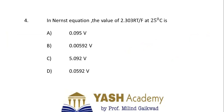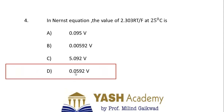Fourth question: in the Nernst equation, the value of 2.303RT/F at 25°C is — A. 0.095, B. 0.00592, C. 5.092, or D. 0.0592. Here R is the gas constant, T is temperature in Kelvin, and F is Faraday's constant. If you substitute these values, the correct answer is D: 0.0592.